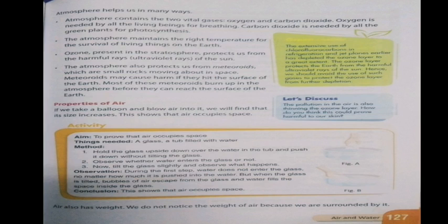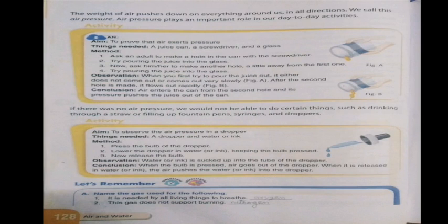Now let's look at the properties of air. If we take a balloon and blow air into it, we find that its size increases — this shows that air occupies space. Air also has weight, though we do not notice it because we are surrounded by it. The weight of air pushes down on everything around us in all directions — we call this air pressure. Air pressure plays an important role in our day-to-day activities, such as drinking through a straw or filling up fountain pens, syringes, or droppers.